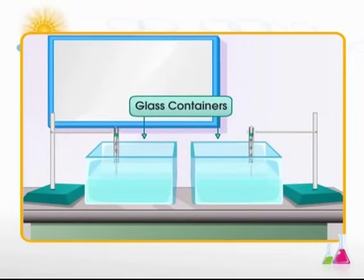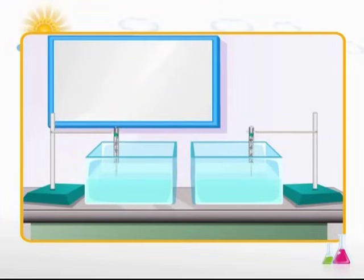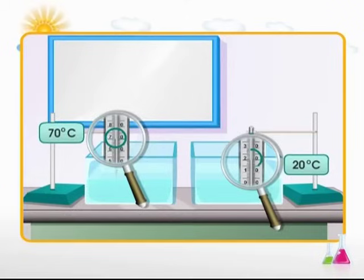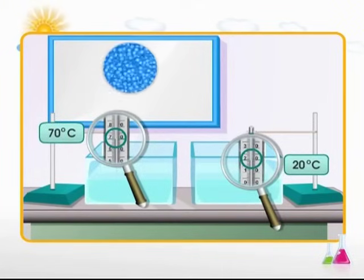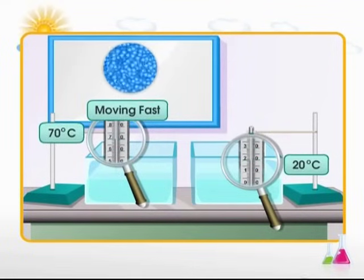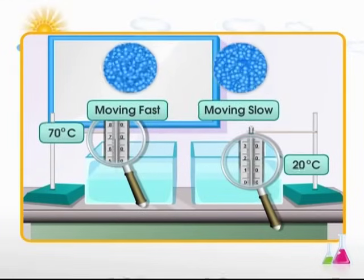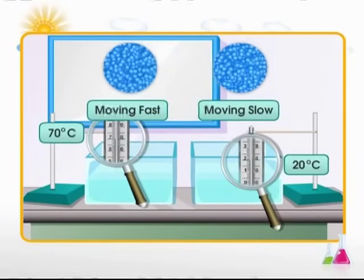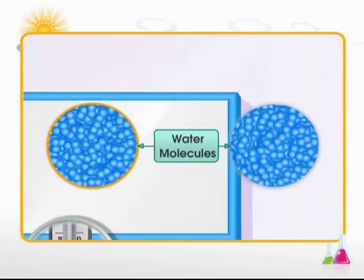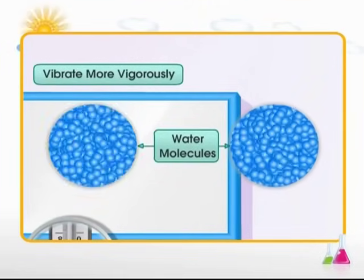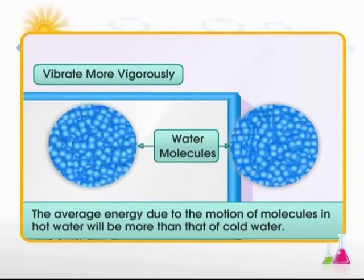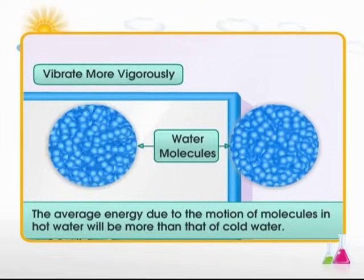Consider two glass containers filled with water. One container is at 70 degrees Celsius and the other at 20 degrees Celsius. The molecules in the water at 70 degrees Celsius will vibrate more vigorously than those in the water at 20 degrees Celsius. The molecules in the hot water vibrate more vigorously because the average energy due to the motion of molecules in hot water will be more than that in cold water.